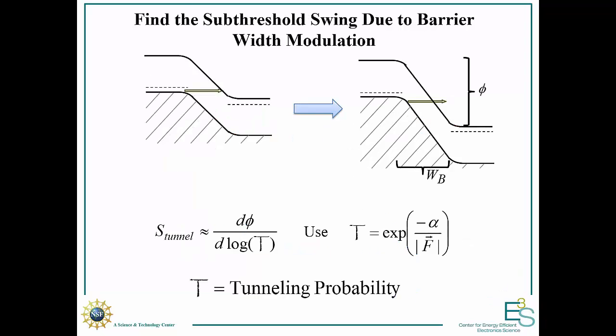First, let's make an estimate of the steepness we can get from barrier thickness modulation. I want to consider just a simple p-n junction, where we have some barrier, a tunneling probability through it, and some potential across it. What we want to know is how steep the turn-on is — that is, how many millivolts it takes to get a decade change in current.